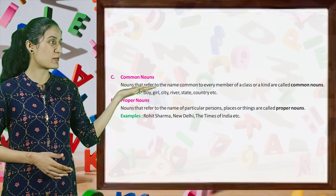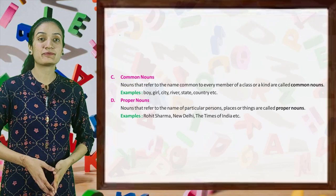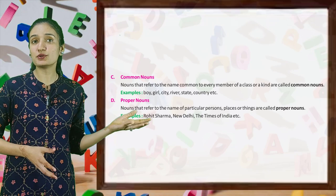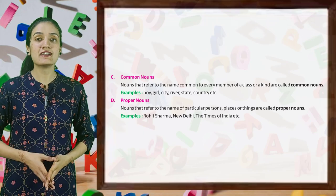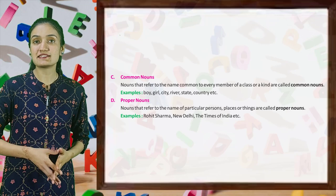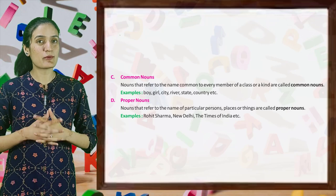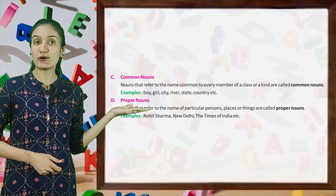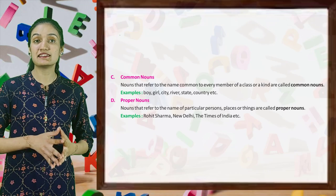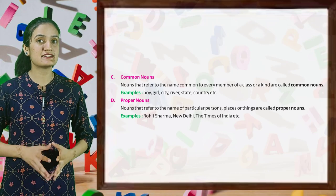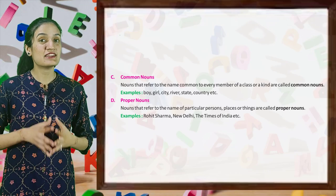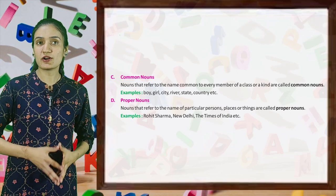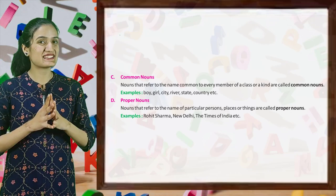So let's begin with common nouns. Nouns that refer to the name common to every member of a class or a kind are called common nouns. Here are some examples: boy, girl, city, river, state, country, etc. So kids, can you give some names of other common nouns? Good.